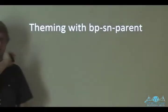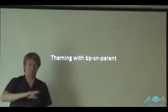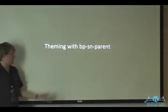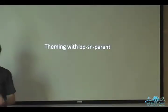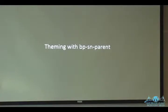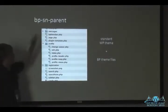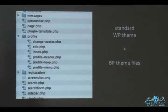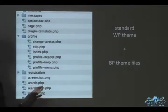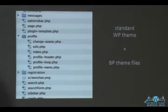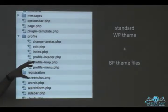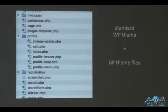Next way to customize is through theming. BuddyPress ships with a theme called BPSN Parent — which stands for Social Networking Parent — and it acts like a skeleton theme for BuddyPress. The standard setup with the orange is a combination of two theme directories: BPSN Parent, which acts as the parent theme, and BPDefault, which is the child theme containing mostly CSS to change colors. Most of the actual markup is contained inside BPSN Parent.